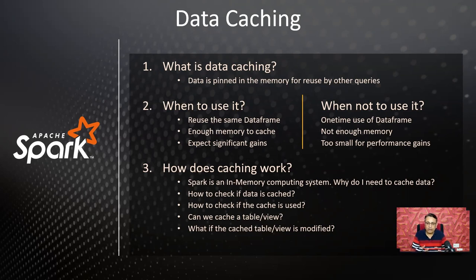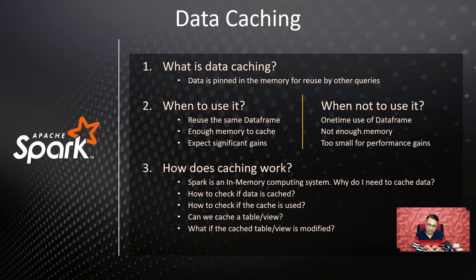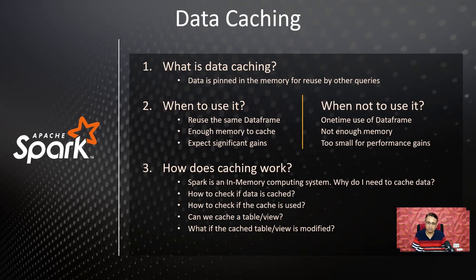The next question is when to use data caching and when not to use it. The most important reason for using data caching is to gain performance benefits. If you are loading data from disk and bringing it into memory, it remains there. If you are reusing that same data again, you can access it from memory — you don't have to go back and read it from the disk. You read it once, bring it into memory, and all additional operations happen from memory, giving you lightning-fast performance. All disk I/O and network operations are eliminated.